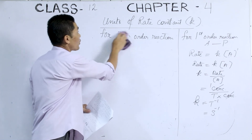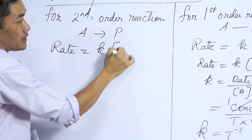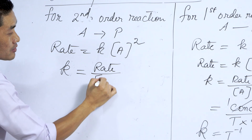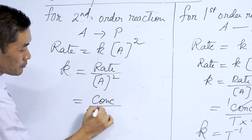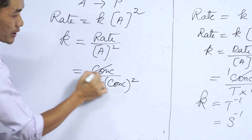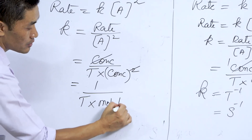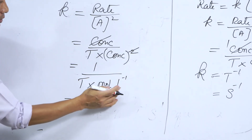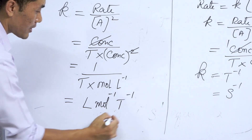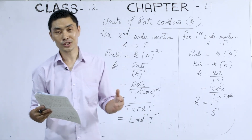For a second order reaction A turning to B, rate equals K into [A]². Therefore K equals rate divided by [A]², which equals (concentration/time) divided by concentration². One concentration term cancels, leaving K equals 1/(time × concentration) = L mol⁻¹ s⁻¹. So liter per mole per time is the unit of the rate constant for a second order reaction. That is all the time we have for today; let us continue in the next class.